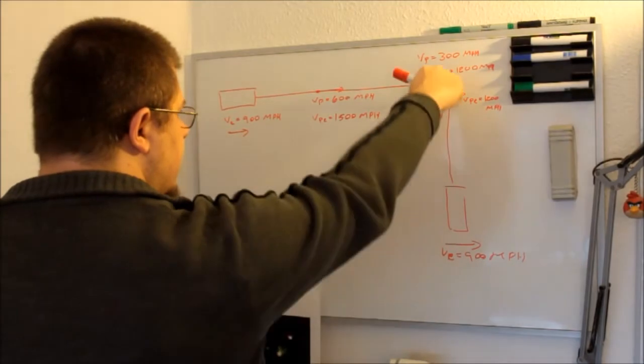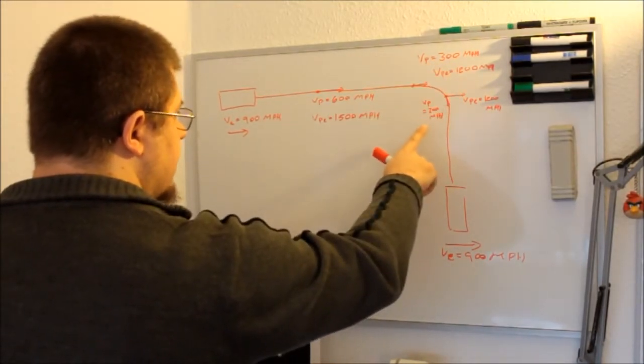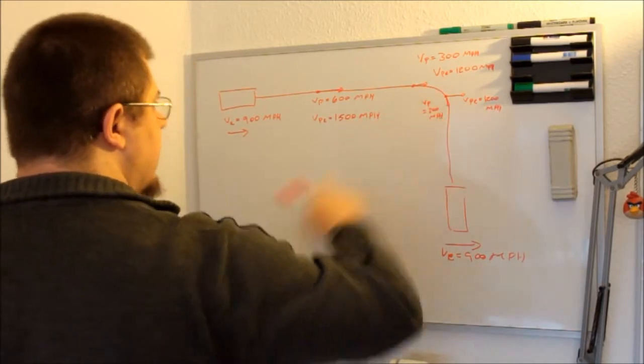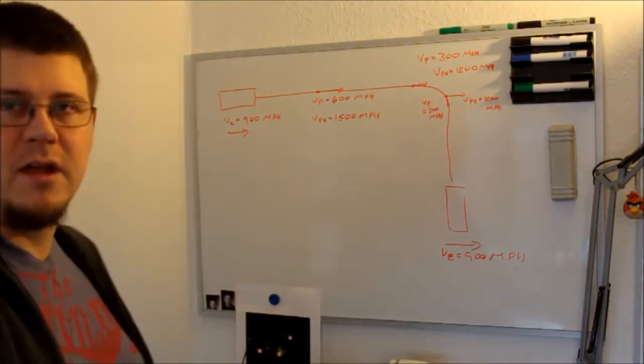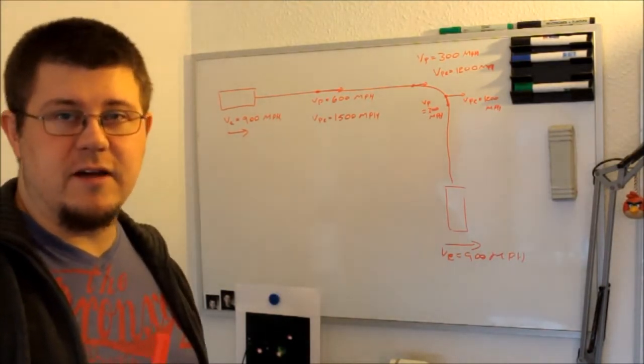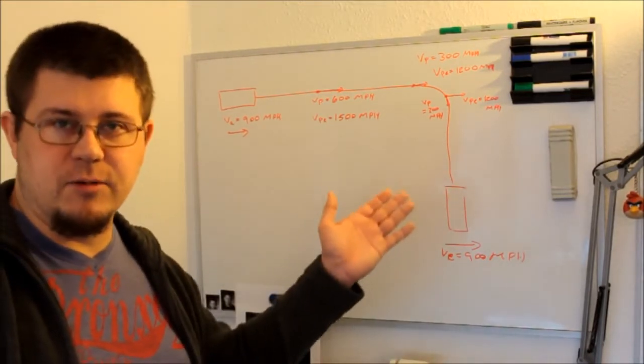He says the airplane is going in this direction down here with 300 miles per hour, but going in this direction as it turns with 1200 miles per hour. And anyone, I would say that anyone that has just basic knowledge about vector calculations can see instantly that this is wrong.